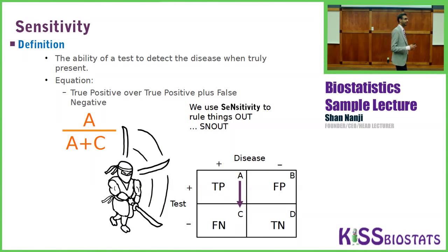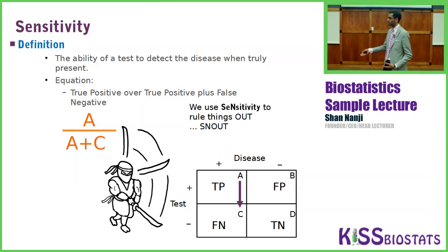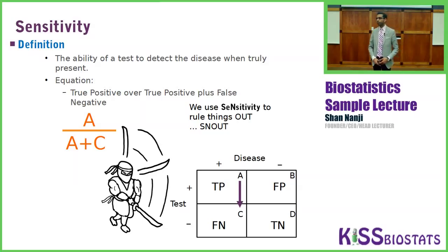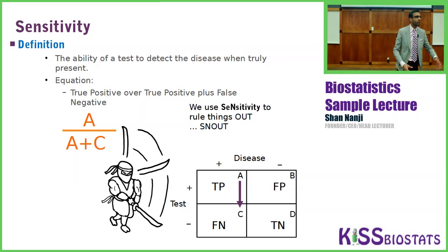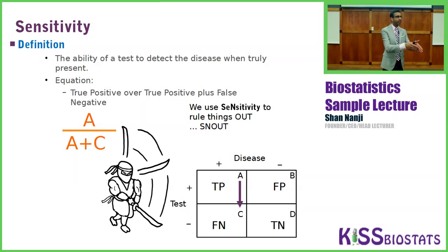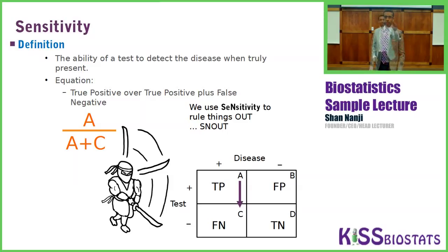Let's talk about sensitivity. Sensitivity is the ability of a test to detect the disease when it's truly present — the ability of a test to say you have this disease when you actually have it. For example, in screening for HIV, we do an ELISA as our sensitive test to detect as many positives as possible. It's okay if we get some false positives; we can go back later and do a specific test. We want to get everybody that might have this disease — it's like an umbrella. The formula is true positive over true positive plus false negative.